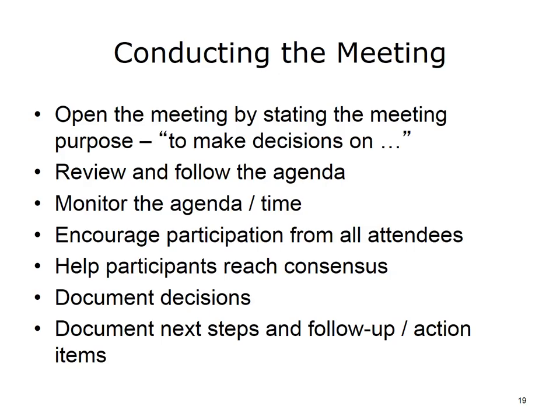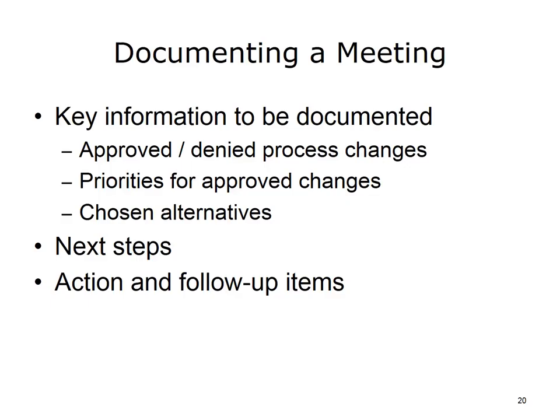Conducting the decision-making meeting includes opening by stating the meeting purpose — for example, to make decisions on which process redesigns to implement. If meeting planning and participant preparation have been thorough, everyone will agree they have sufficient information, the right people, and are prepared to make decisions. The facilitator should review and follow the agenda, monitor time, encourage participation from all attendees, help participants reach a decision, and document decisions, next steps, and action items. Key information to document includes decisions on each proposed process change, approved or denied process changes, priorities for approved changes, chosen alternatives, next steps, and action and follow-up items.